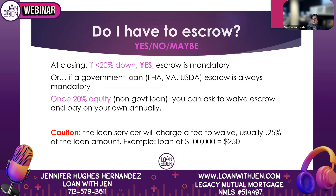Do you have to escrow? Yes, no, maybe. If you put down less than 20% at closing, yes, escrow is mandatory. And if you've got a government loan — meaning FHA, VA, or USDA — escrow is always mandatory, no matter if you have the 20% equity or not.